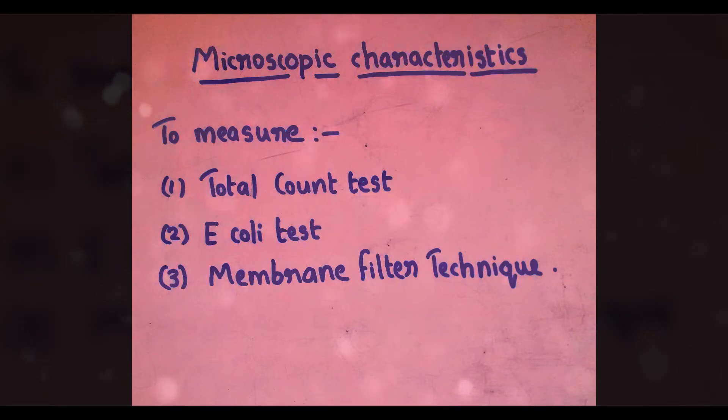First, Total Count Test. It is a simple method. Bacteria are cultivated from different dilutions of water sample and the colonies formed are counted. The result is computed per 100ml. For drinking water, the total count shall not be more than 1 per 100ml.